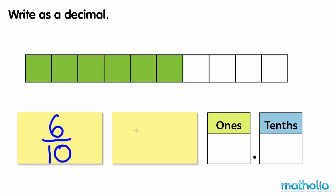We can also write this as the decimal 0.6. We can show six-tenths on a place value chart. There are zero ones and six-tenths.